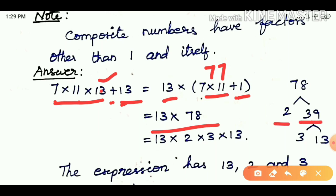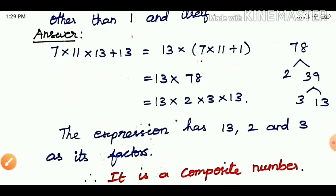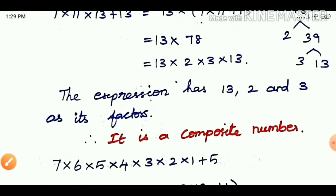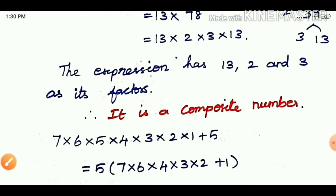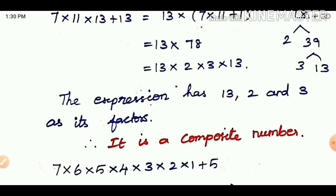Now let's split 78 into prime factors. 78 equals 2×39, and 39 equals 3×13. So the prime factors are 2×3×13. Therefore, the expression equals 13×2×3×13, which has factors 13, 2, and 3. Since it has factors other than 1 and itself, it is a composite number.